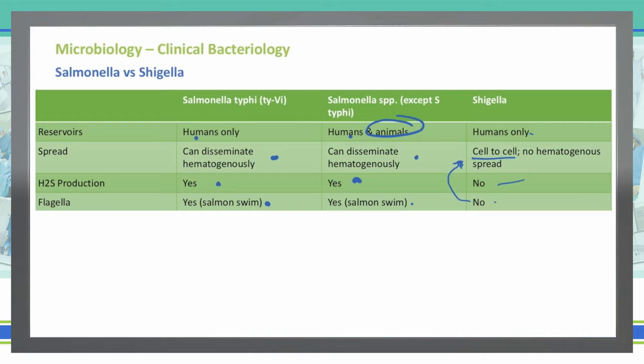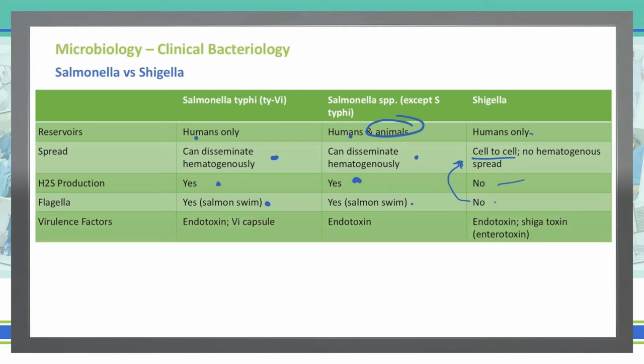What causes the virulence with these particular bacteria? With Salmonella typhi, it's an endotoxin as well as a Vi capsule. The Salmonella typhi does have a Vi capsule. All the rest of the Salmonella species only have that endotoxin — they do not have that Vi capsule. Shigella has the endotoxin as well as the Shiga toxin, which is an enterotoxin.